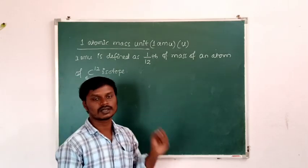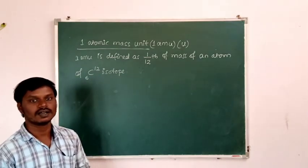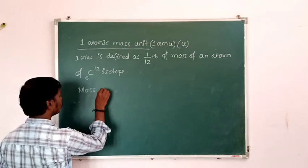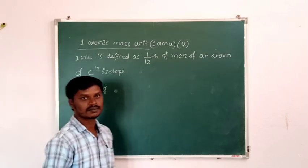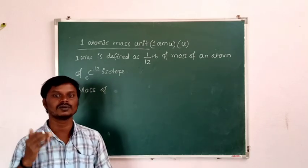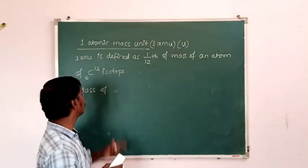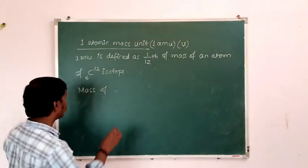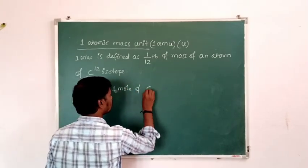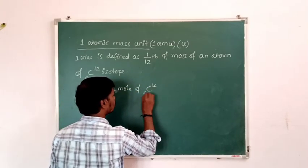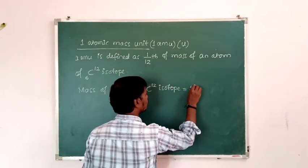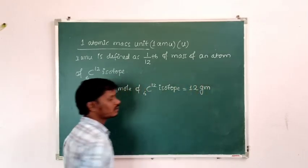Now, how do we find the mass of one atom of the Carbon-12 isotope? We already know that the mass of one mole of Carbon-12 isotope is 12 grams, which is approximately equal to its mass number. We use carbon because it has a whole number atomic mass. So the mass of one mole of Carbon-12 isotope is equal to 12 grams.